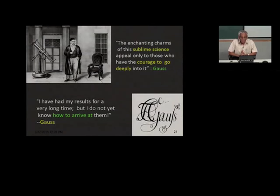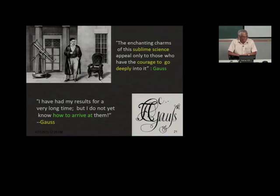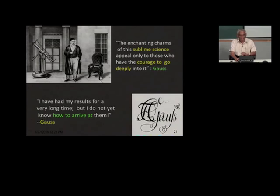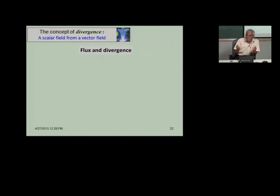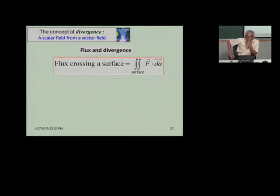There are some very nice quotes one can read. 'The enchanting charms of this sublime science appeal only to those who have the courage to go deeply into it.' When you talk about divergence, the idea that comes to mind immediately is that of flux. What is the difference between flux and divergence? Why do we need two different concepts? Flux crossing a surface is given by the surface integral: F dot dA. To define a flux, you need a vector field and a surface.